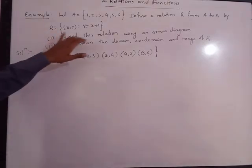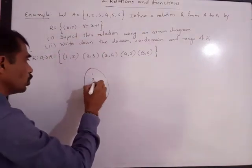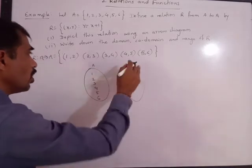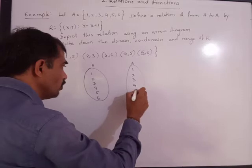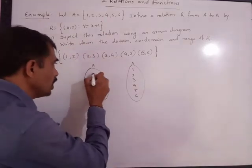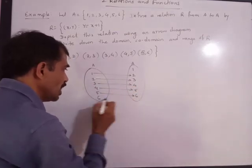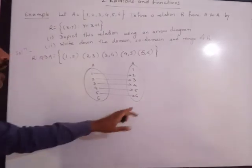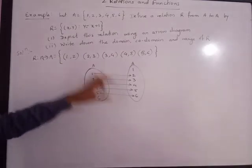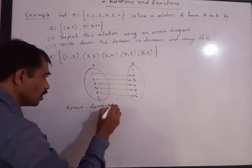Let us depict this relation using an arrow diagram. Set A has elements 1, 2, 3, 4, 5, 6, and we build a relation on A itself where y = x + 1. So 1 is related to 2, 2 to 3, 3 to 4, 4 to 5, and 5 to 6. The element 6 would relate to 7, but 7 is not in set A, so 6 has no relation. This is the arrow diagram of the given relation.